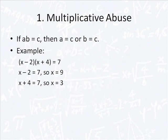So our first instance is multiplicative abuse. Way too often I have seen students try to factor things without going through the entire process. Namely, they say that if we have the product of two things, a times b equaling c, then either a is c or b is c. So one example: suppose we have the following equation, solve for x. The product of (x - 2) and (x + 4) is equal to 7.